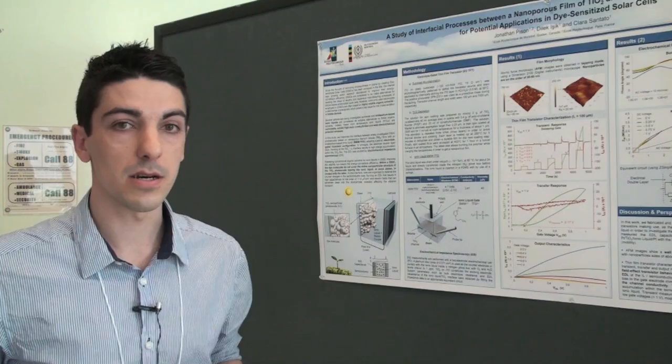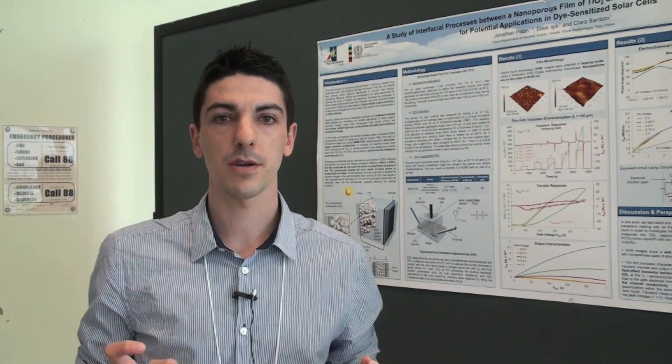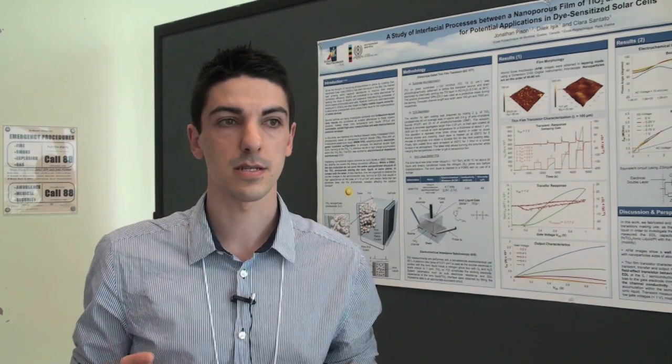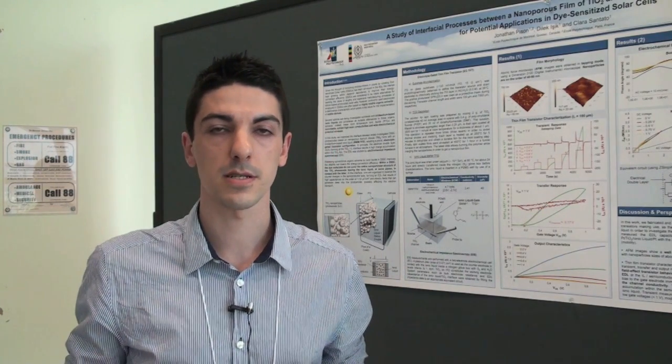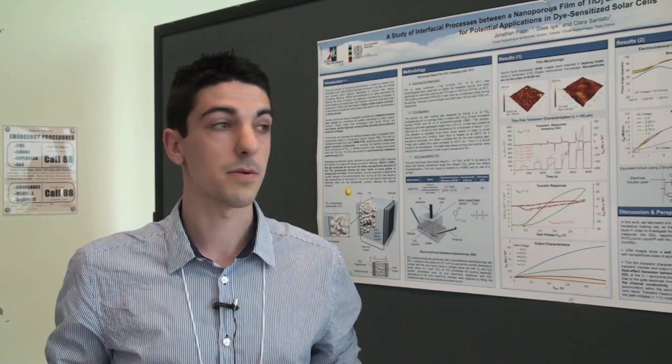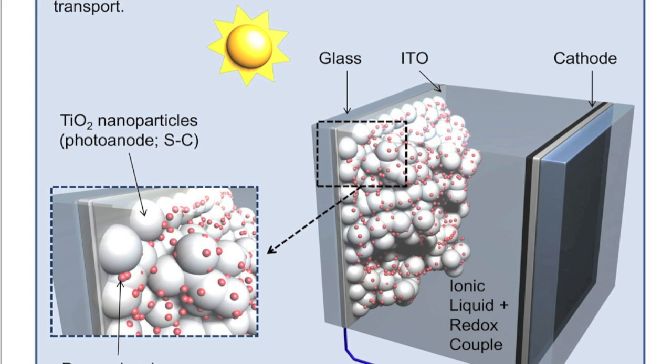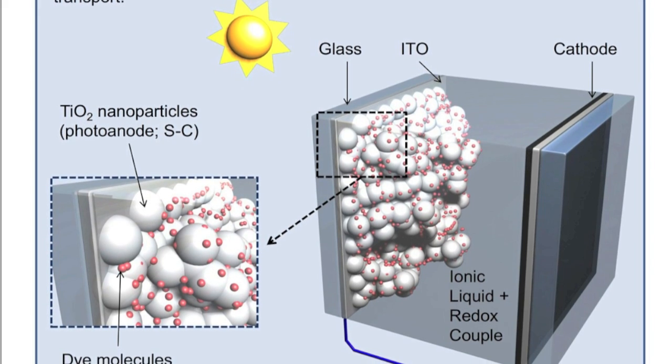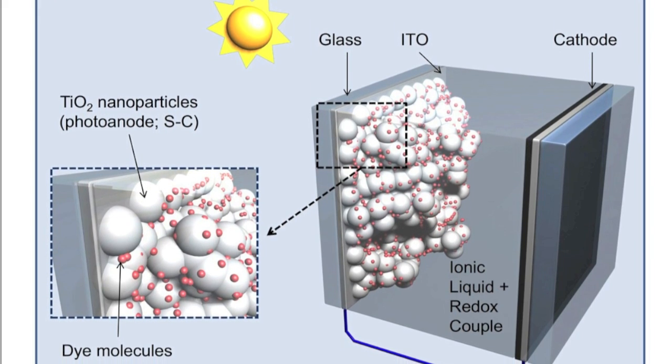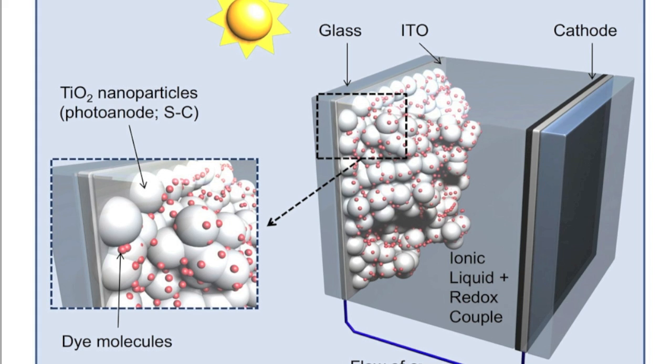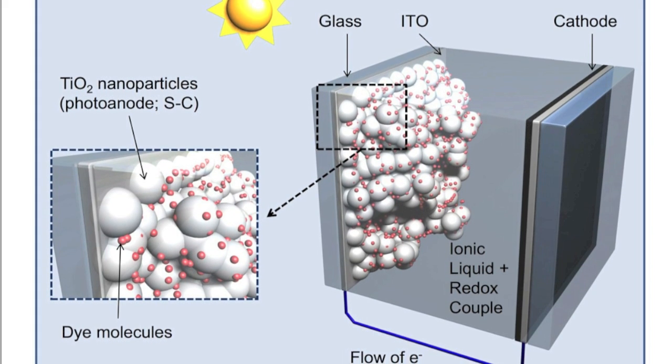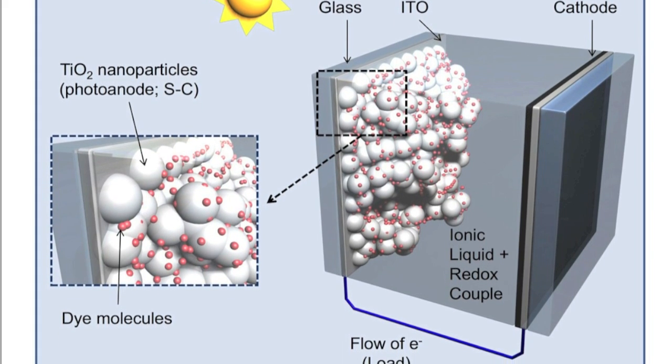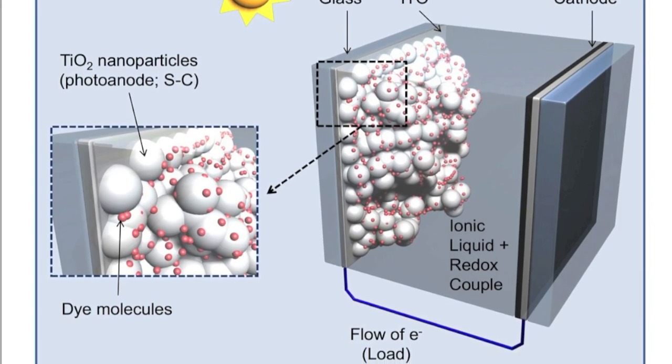So basically, the principle of power generation of dye-sensitized solar cells is really amazing. It's very similar to that of photosynthesis of plants. The basic components are a photoanode, which is here, a titanium dioxide semi-conducting nanoporous film. You have a cathode, dye molecules, and an electrolyte containing a redox couple.